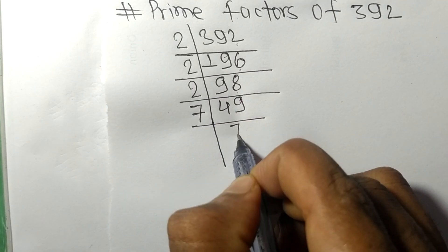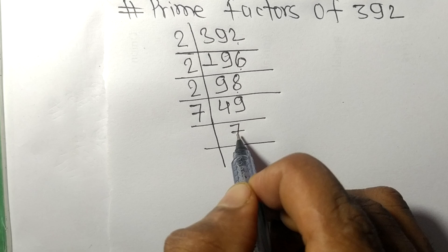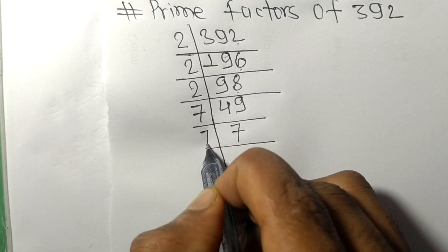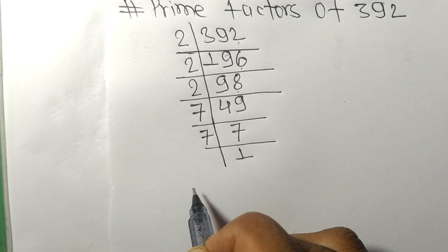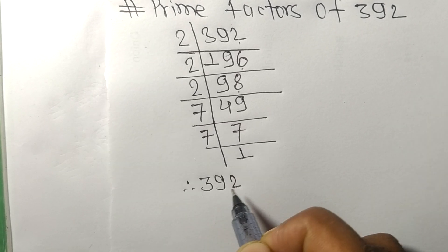We get 7. Now 7 is divided by 7 itself and we get 1. Therefore, 392...